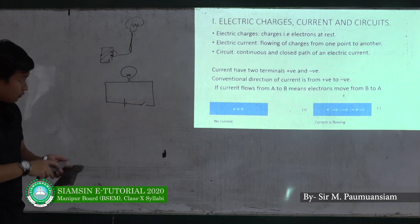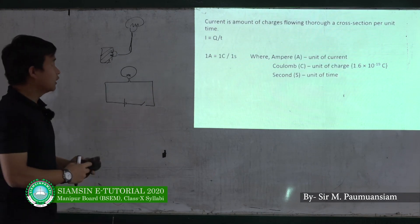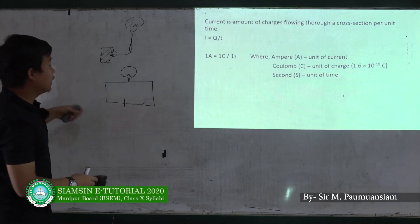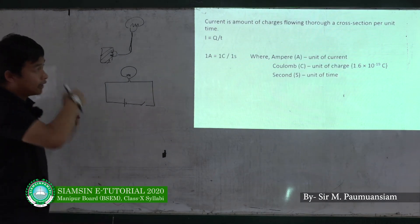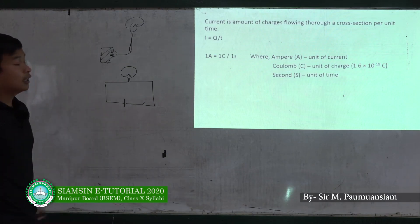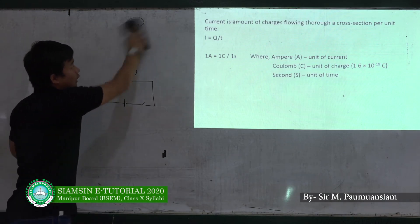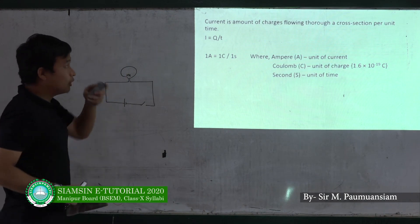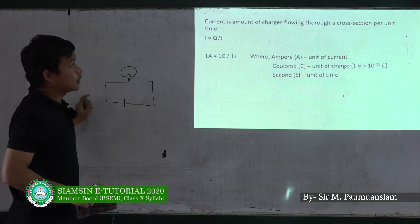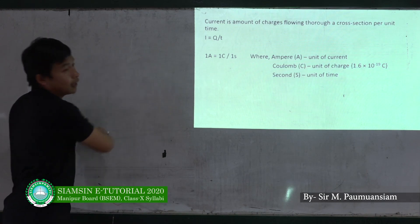Now let me look at current. Current is the amount of charge flowing through a cross-section per unit time. There is a significant difference in this definition.